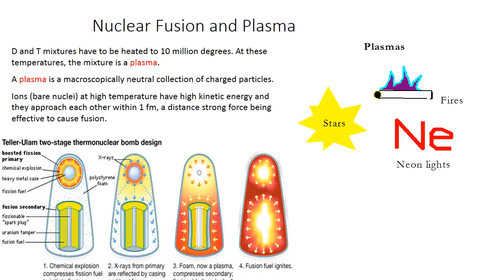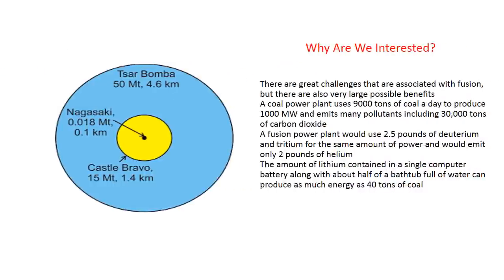D-T mixtures must be heated to 100 million degrees; at these temperatures the mixture becomes a plasma — a macroscopically neutral collection of charged particles. Ion nuclei at high temperature have high kinetic energy and approach each other within 1 fm, the distance at which the strong force causes fusion. There are great challenges associated with fusion, but also very large possible benefits.